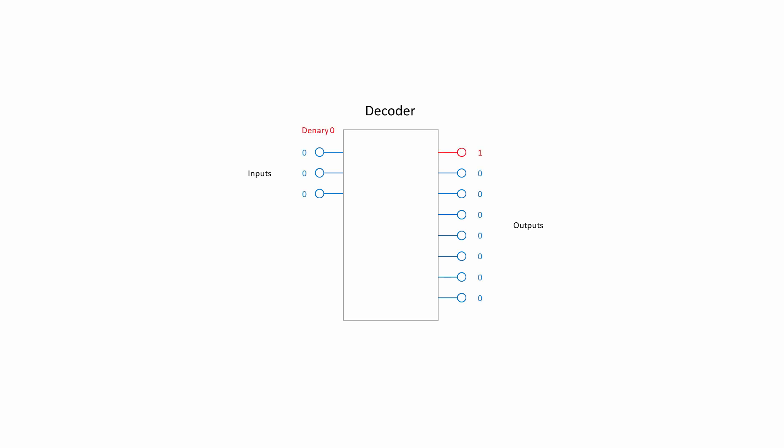If, for example, all three inputs are set to a low voltage, the top output line is set to a high voltage — the top output line is activated. If the first input is high, the second output is activated instead. If the second input only is high, so the inputs collectively represent the denary value 2, the third output is activated.